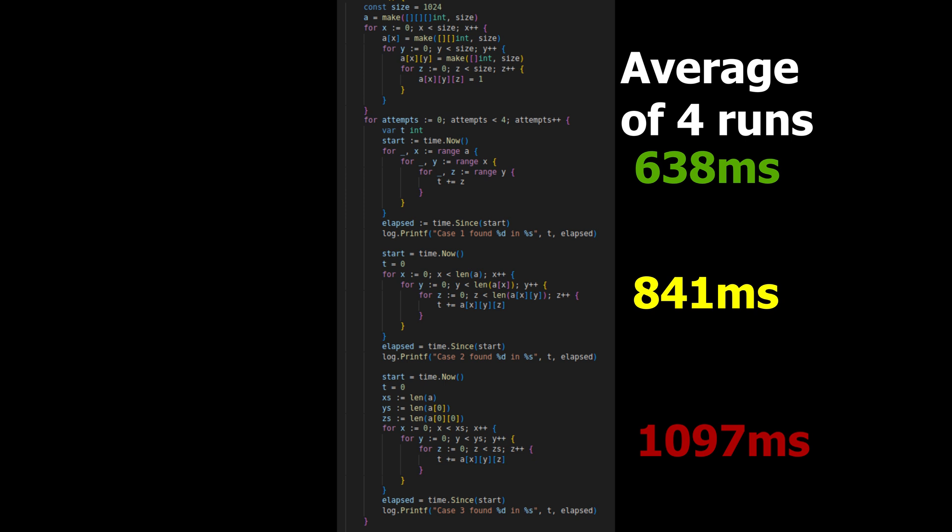The thing that really surprised me was that caching the results of len actually made the loops slower. The best I expected was that they'd be the same speed, but apparently the compiler has some genius in it that recognized the second structure and can create a highly optimized set of instructions from it.